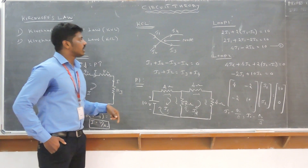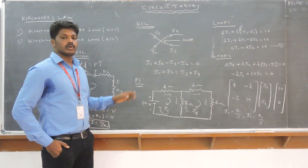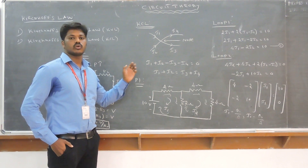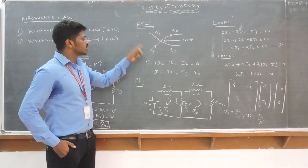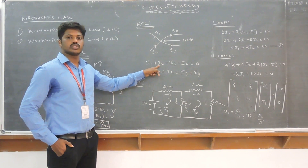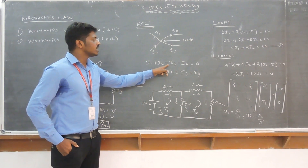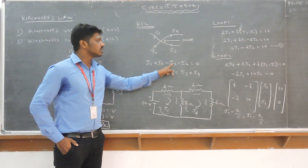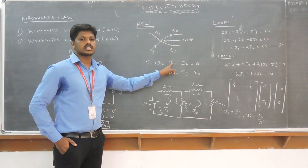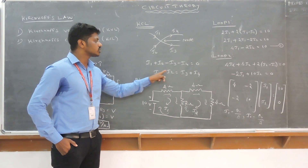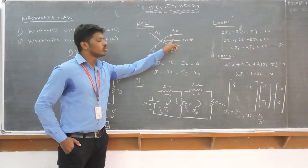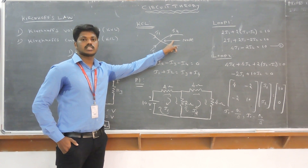Next, Kirchhoff's Current Law: the sum of the entering current equals the leaving current at a node junction. So from this, I1 plus I2 is the entering current, and minus I3 minus I4 equals zero. Minus I3 minus I4 is the leaving current. Therefore, I1 + I2 = I3 + I4. That is entering current equals leaving current from the node junction — that is called Kirchhoff's Current Law.